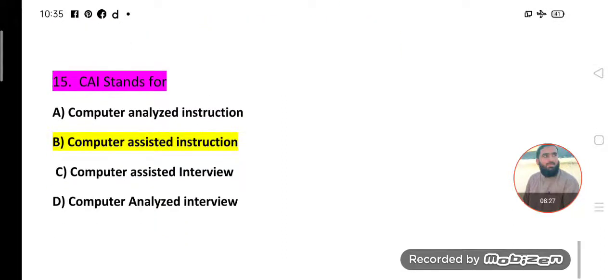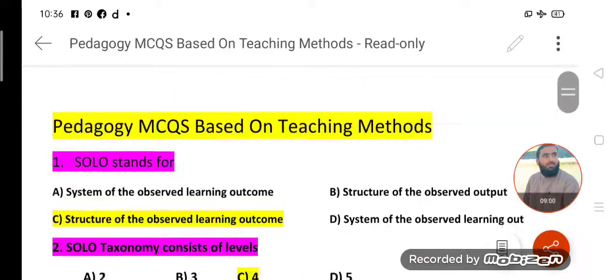C.A.I. stands for Computer Assisted Instruction. Dear students, this abbreviation has repeated many times, like the first MCQs about S.O.L.O. stands for. C.A.I. stands for Computer Assisted Instruction - when you are giving instructions with the help of computer, this is called C.A.I., which stands for Computer Assisted Instruction.